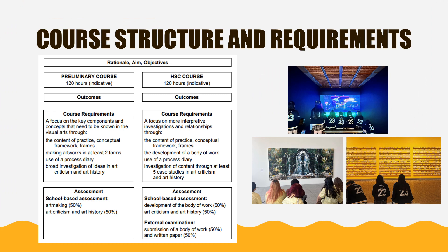The course structure for Visual Arts is 50% theory and 50% practical. This is for both Year 11 and Year 12. In Year 11, students will create artworks in a range of mediums and forms, so that they are able to learn new skills and build on their existing knowledge.